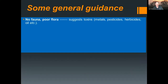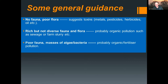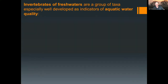Some general guidance on pollution assessment: no fauna or poor fauna suggests toxins — metals, pesticides, herbicides, oils, etc. A rich but not diverse fauna probably indicates organic pollution like sewage or farm slurry, which can remove oxygen from the water body and many key species. Poor fauna but masses of algae and bacteria suggests organic or fertilizer pollution. So we can look at broad conditions and draw conclusions about what is affecting our water body.